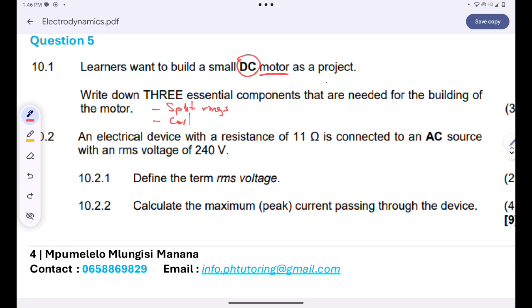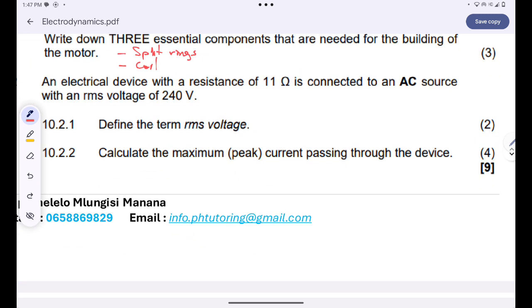The root mean square voltage is the alternating current potential difference which dissipates the same amount of energy as an equivalent direct current potential difference. Let me repeat. The root mean square voltage is the AC potential difference which dissipates the same amount of energy as an equivalent DC potential difference. That's the definition of the term RMS voltage.